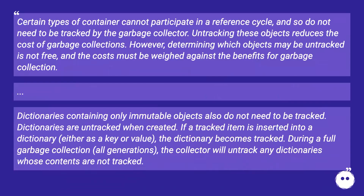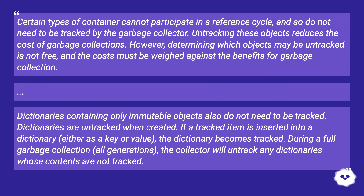From GCModule.c: Certain types of container cannot participate in a reference cycle, and so do not need to be tracked by the garbage collector. Untracking these objects reduces the cost of garbage collections. However, determining which objects may be untracked is not free, and the costs must be weighed against the benefits for garbage collection. Dictionaries containing only immutable objects also do not need to be tracked. Dictionaries are untracked when created. If a tracked item is inserted into a dictionary, either as a key or value, the dictionary becomes tracked. During a full garbage collection across all generations, the collector will untrack any dictionaries whose contents are not tracked.